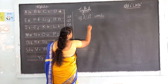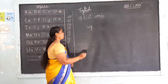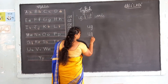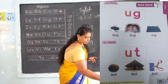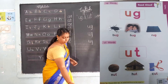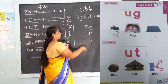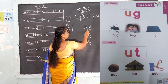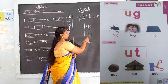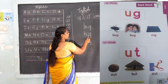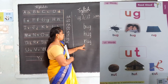Today we are going to learn UG words. What is the sound of U and G? U, G. The next one — what is the sound of H? H, U, G — hug. The next one — R, what is the sound of R? R, U, G — rug.